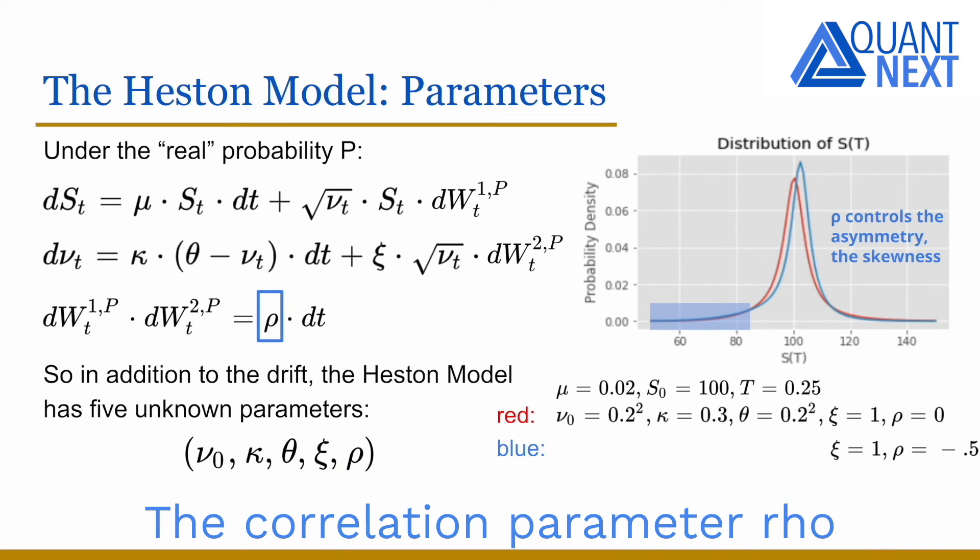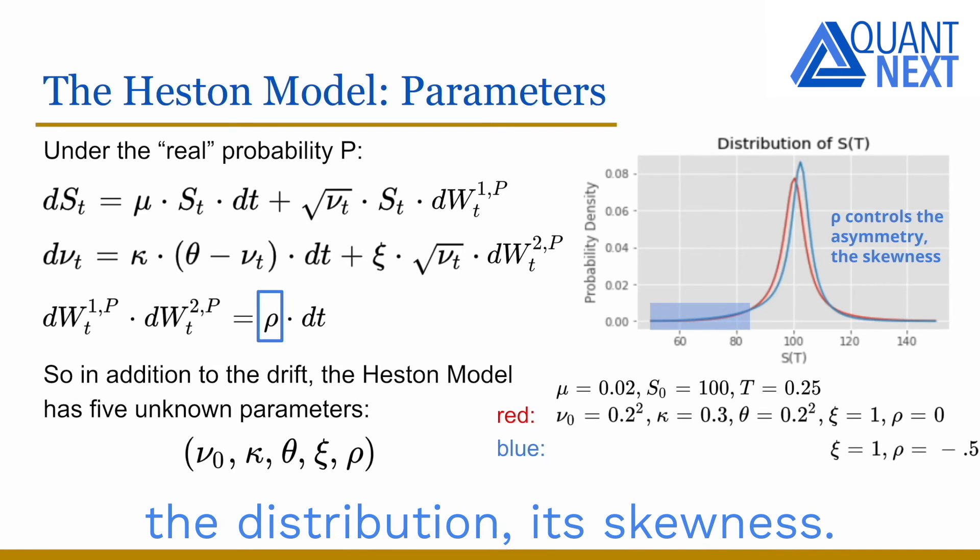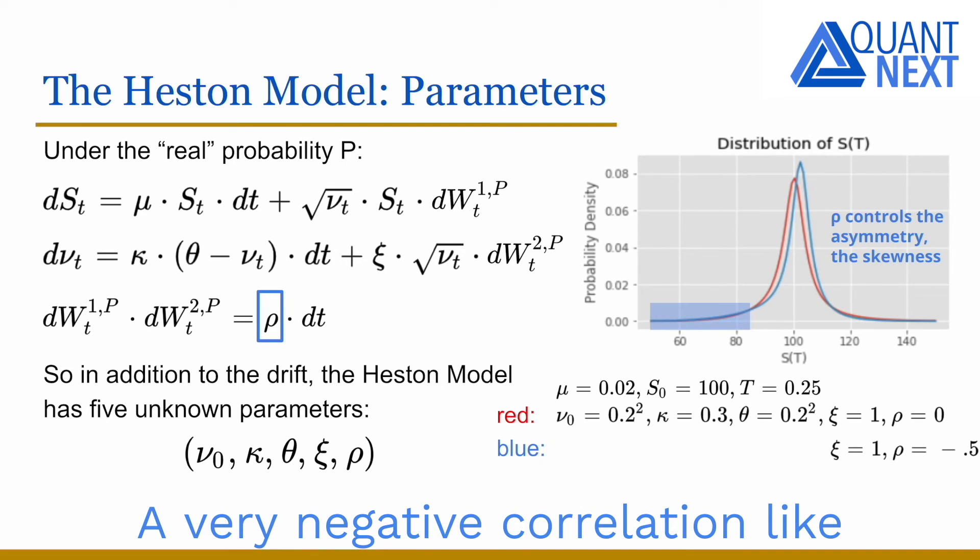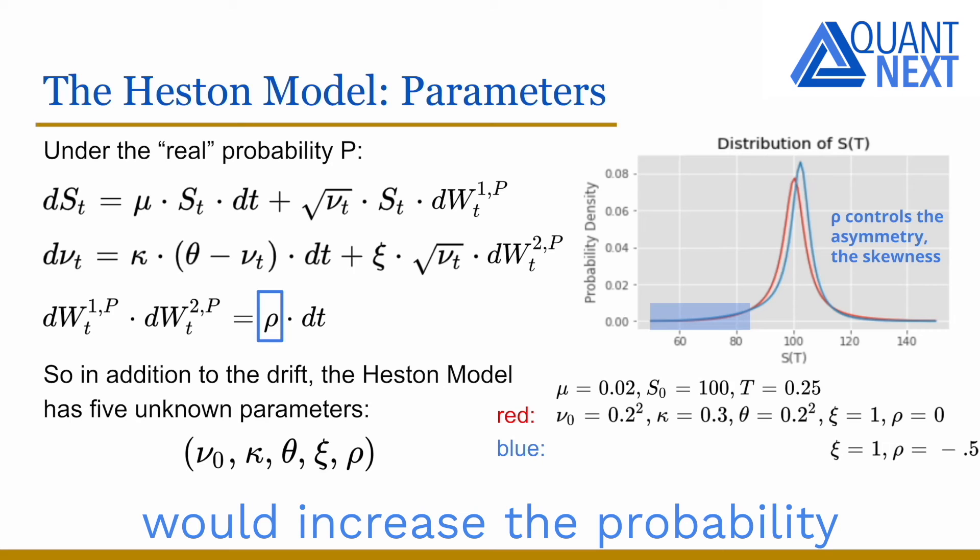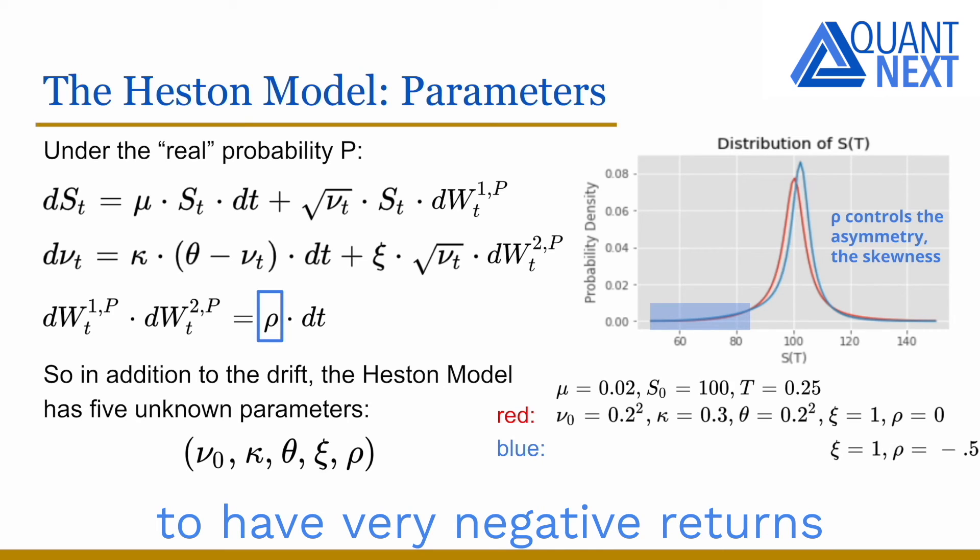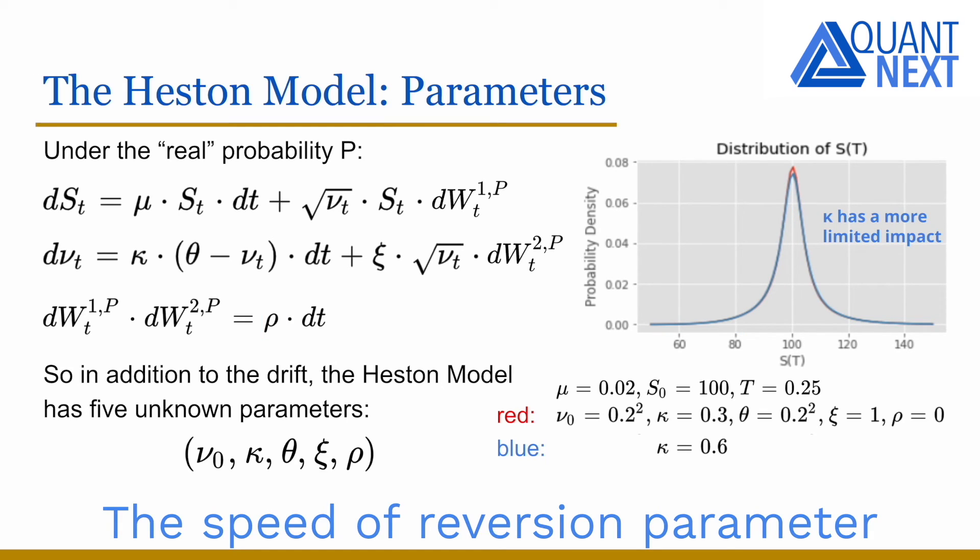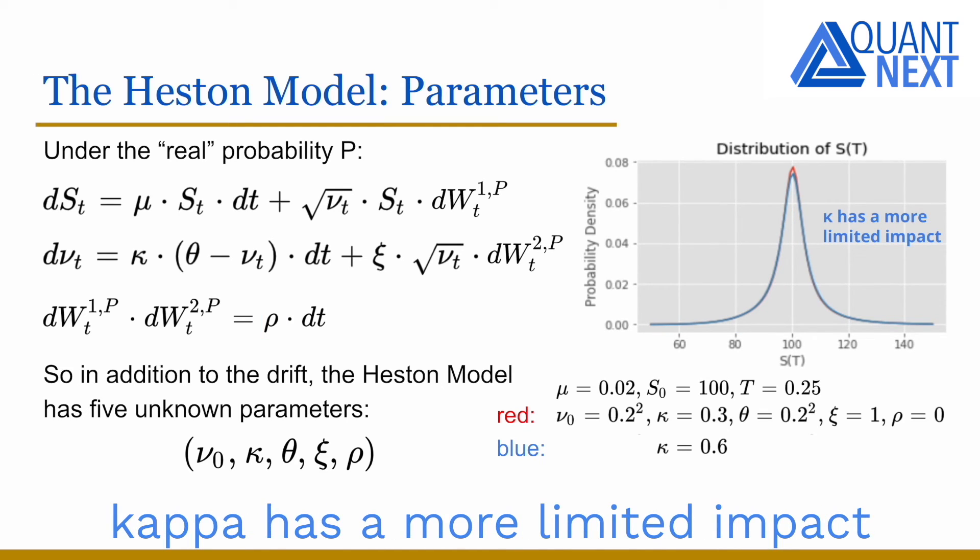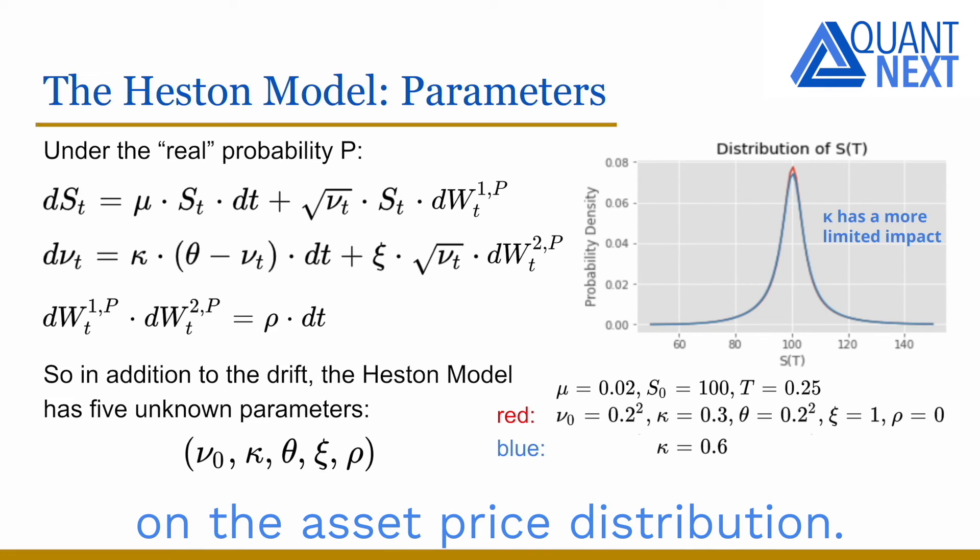The correlation parameter rho controls the asymmetry of the distribution, its skewness. A very negative correlation, like what we observe in general on the stock market, would increase the probability to have very negative returns with higher fluctuations on the downside. In this case, the distribution would have a negative skewness.